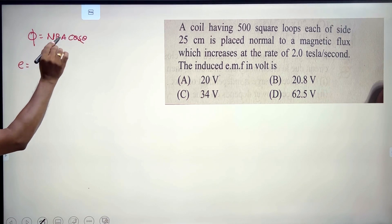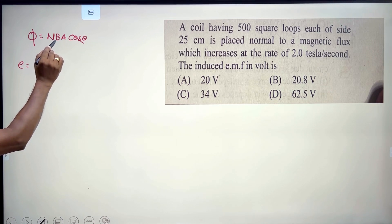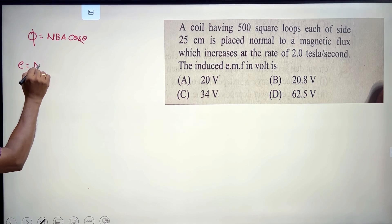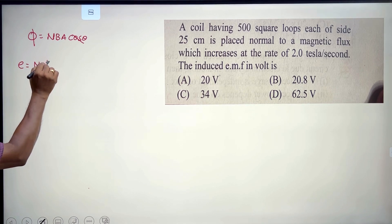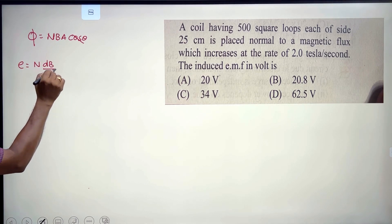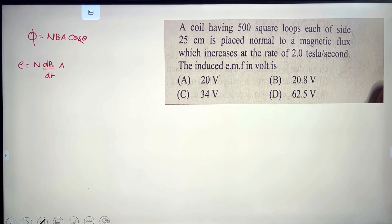The induced EMF is given by E = N·A·(dB/dt), since theta is zero and cos(theta) equals one.